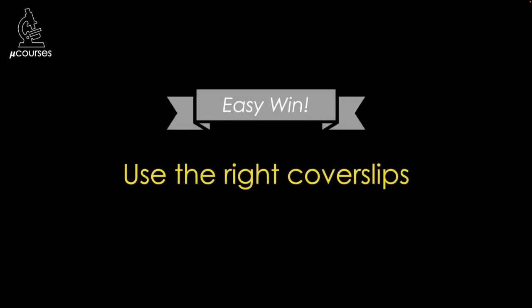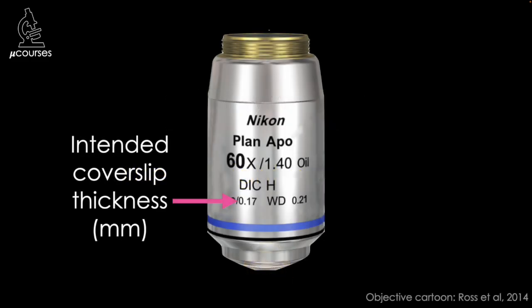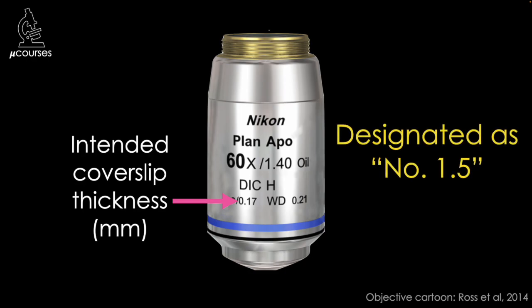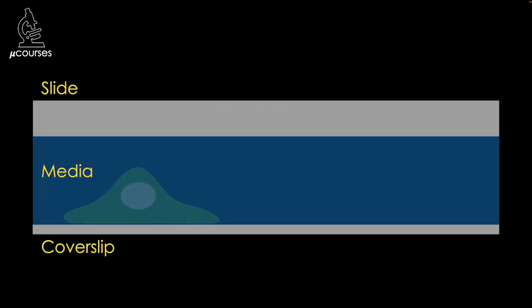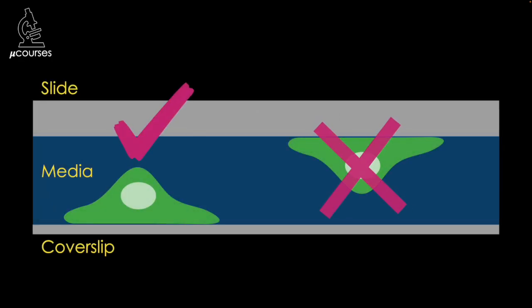One of the easiest things you can do is to make sure you're using the right coverslips — the type the optical engineer who designed the lens assumed you would use. Most objective lenses were designed to image through a coverslip of a particular thickness, marked on the barrel of the objective in millimeters. You'll most often see 0.17 millimeters, which corresponds to a coverslip graded as a number 1.5. Next, try to get your object of interest as close as possible to the coverslip, because spherical aberration increases as you focus farther away. Every micron counts.